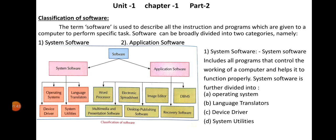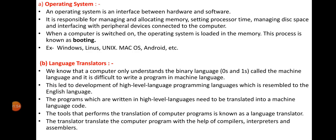The four categories of system software are: first, operating system; second, language translator; third, device driver; and fourth, system utilities.